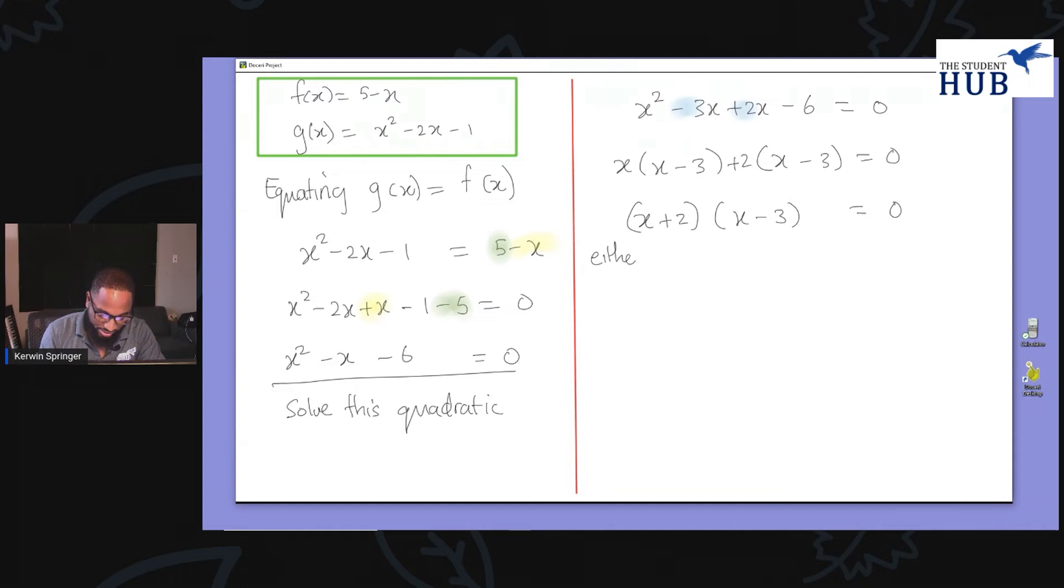So when we factorize the quadratic and reach this stage, we say either x plus 2 is 0 or x minus 3 is equal to 0. Because if there's a product and you're getting 0, it means one of them must be 0. So maybe it's this one or maybe it's this one. So either x plus 2 is equal to 0, and if x plus 2 is equal to 0, x must be negative 2. And if x minus 3 is equal to 0, x must be 3. So we figured out two values for x, two possible values for x.